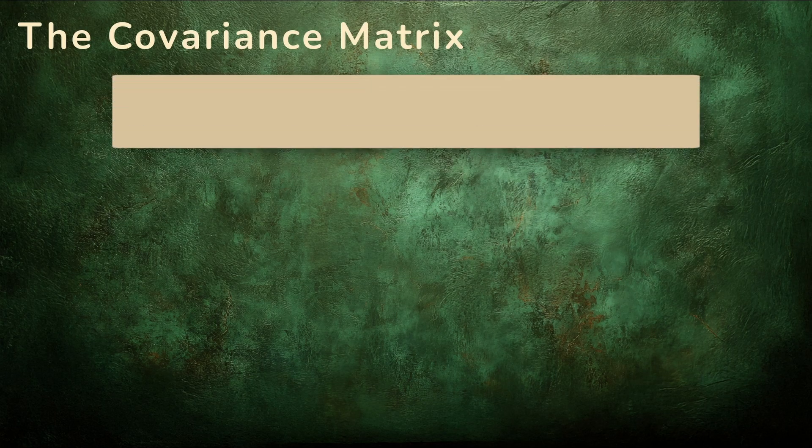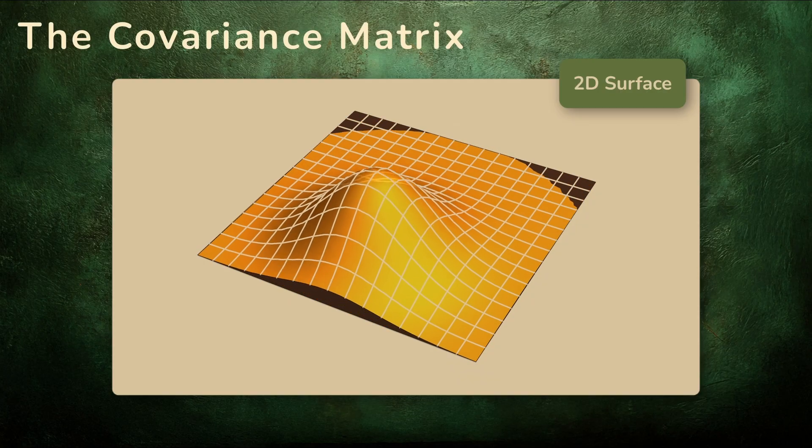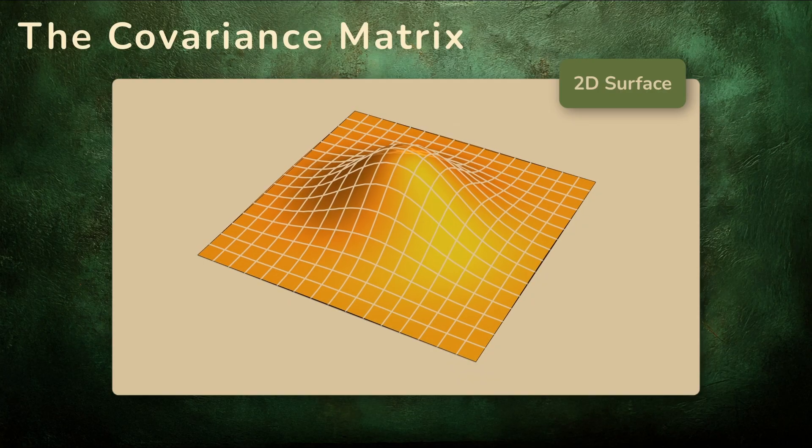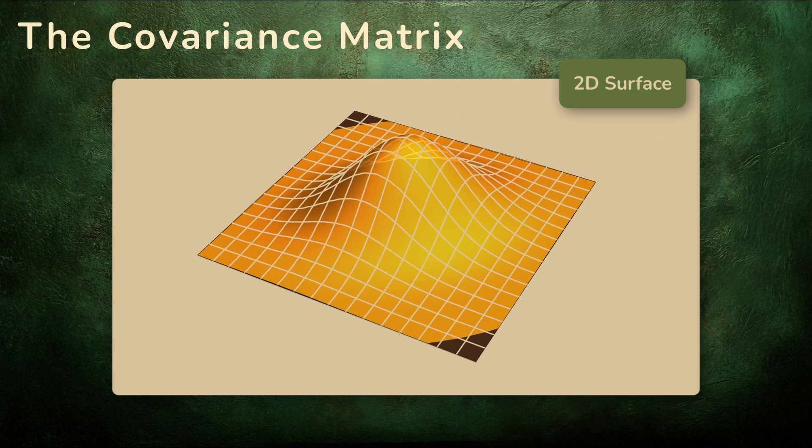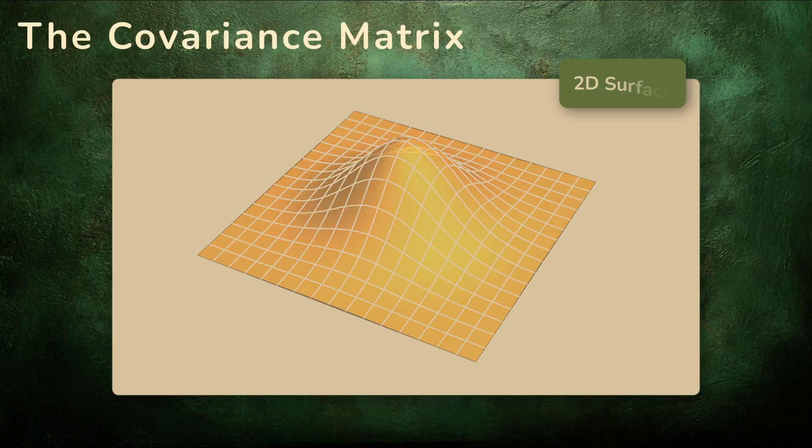But a two-dimensional surface is richer. The location is described by the mean vector. But for the shape, we need three pieces of information. The width in the x direction, the width in the y direction, and whether the shape leans. Taken together, these three numbers fully describe the way the surface tapers off in all directions.